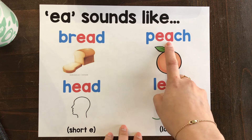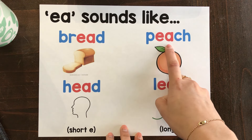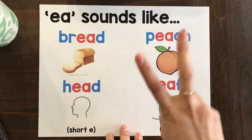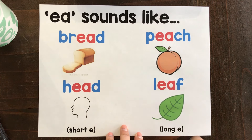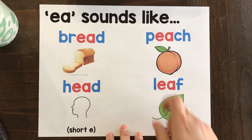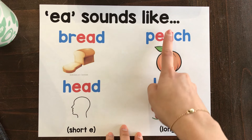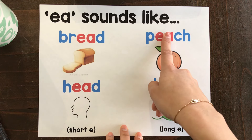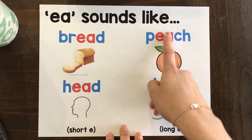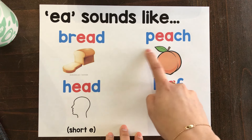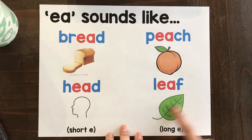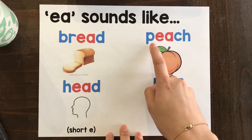Remember we have our vowel team song: when two vowels go walking, the first one does the talking. It makes the sound that says its name. The other one goes to sleep. Good night. So here that follows the rule.